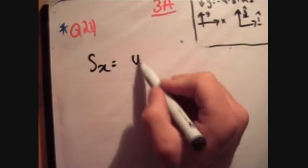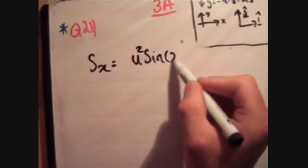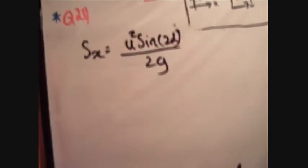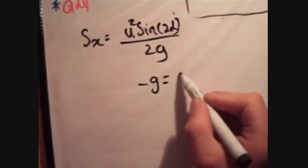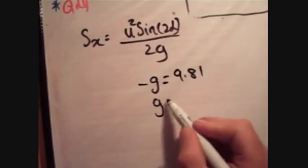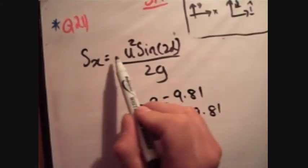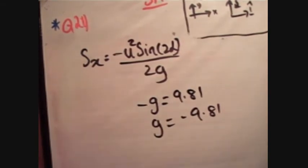So part B says the following. It says that a particle is fired from a point on a horizontal plane with initial speed 28 meters per second at an angle alpha, and we're told the range is equal to 40 meters. However, in question 18, we proved that S sub x, the range, is equal to u squared sine 2 alpha over 2g. Now, of course, remember, the book says that minus g is equal to 9.81, where I say g is equal to minus 9.81. For that reason, I'm going to put a negative sign there. It's the same thing, of course. It's just that I've accounted for the negative sign in a different place.